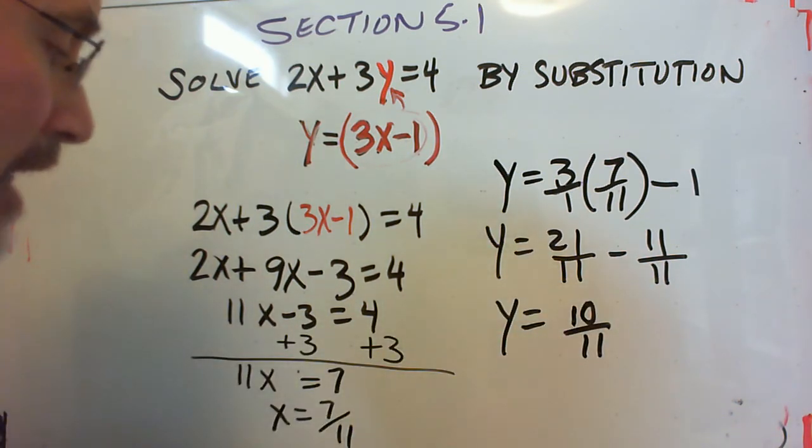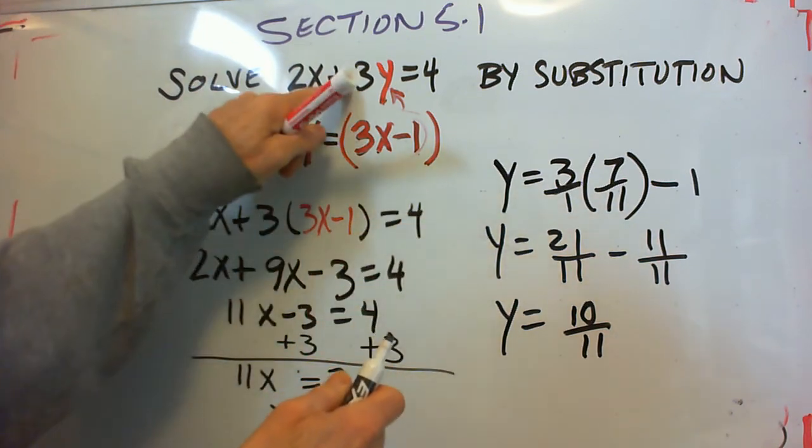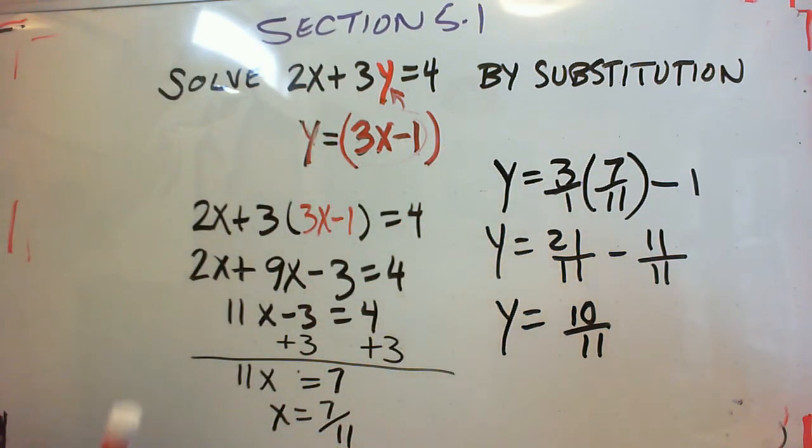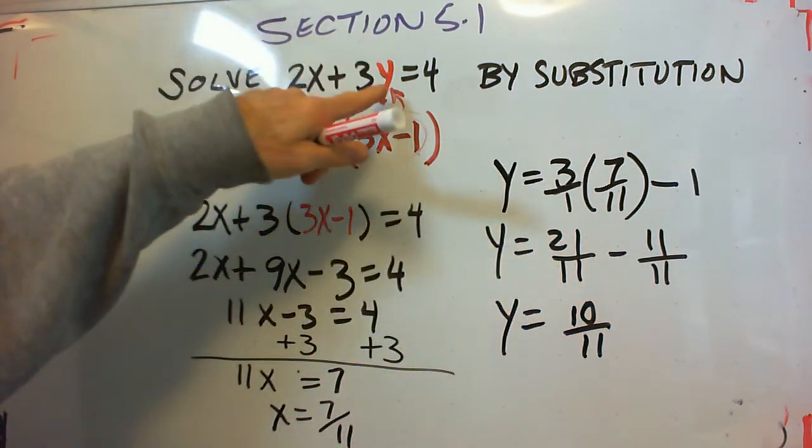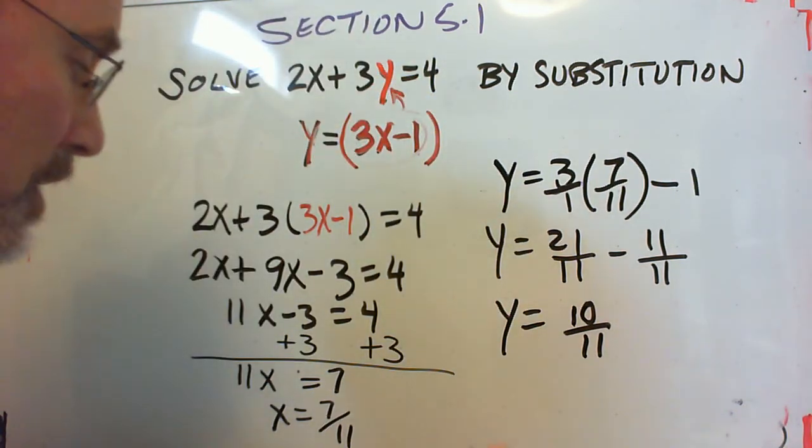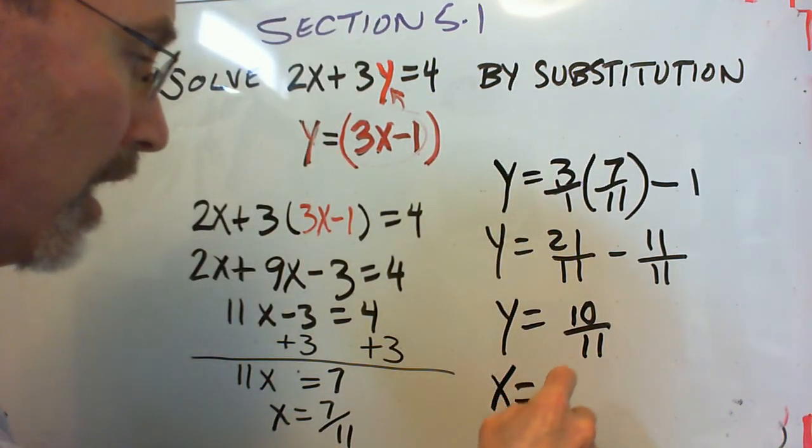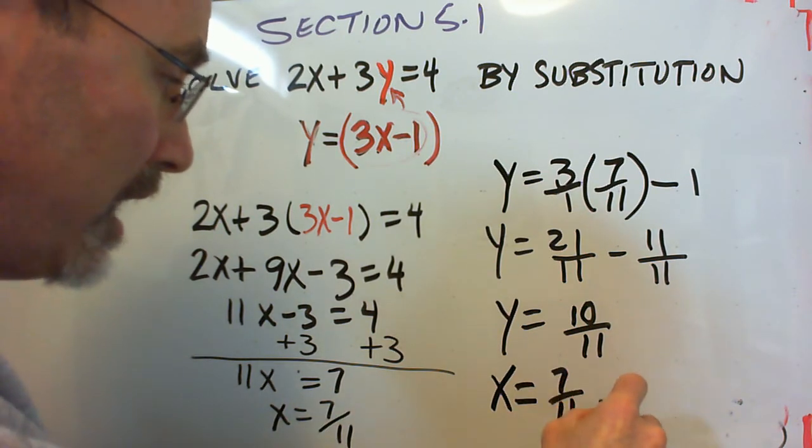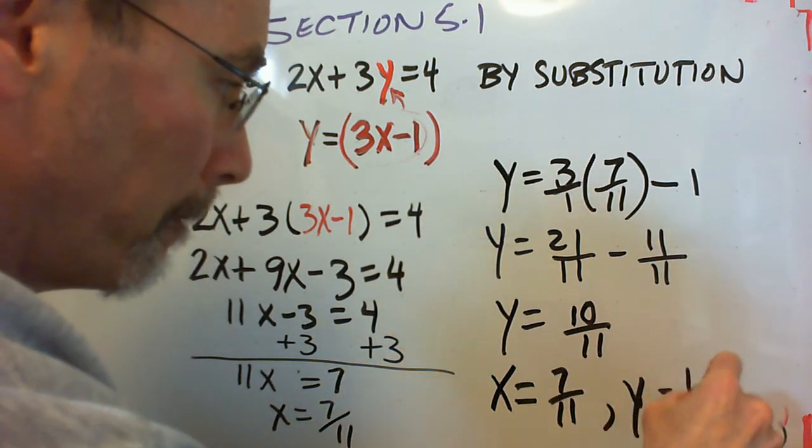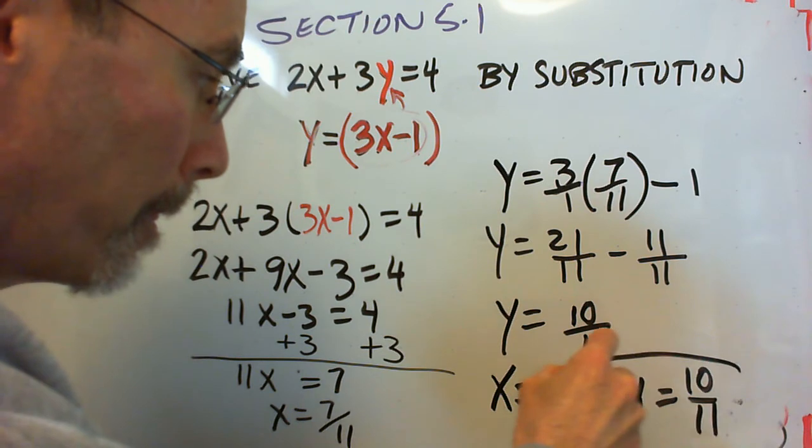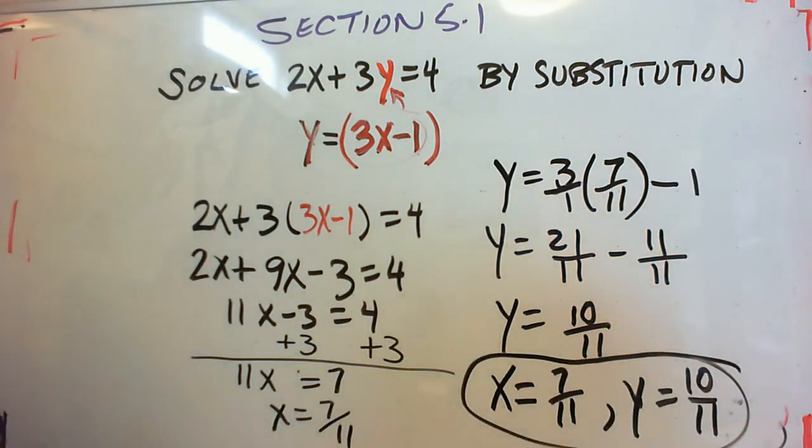21 elevenths minus 11 is 10 elevenths. And I've checked both of these answers in the first equation. They do work. 14 elevenths plus 30 elevenths makes 44 elevenths which is 4. So the answers do check out. So our solution is x equals 7 elevenths, y equals 10 elevenths.